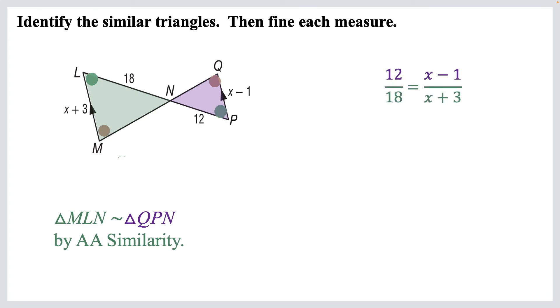So 12 partners with 18, and X minus 1 partners with X plus 3. Cross multiply, if you want to reduce that fraction 12 over 18 first, you can. I didn't happen to this time. 12X plus 36 equals 18X minus 18. Let's simplify this. 54 equals 6X, and X equals 9.